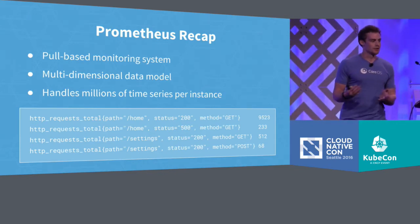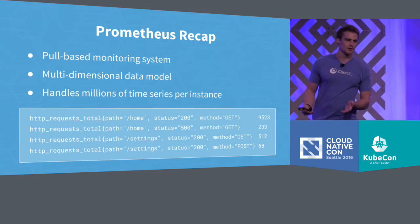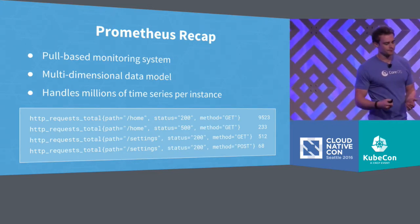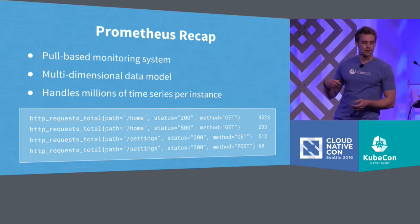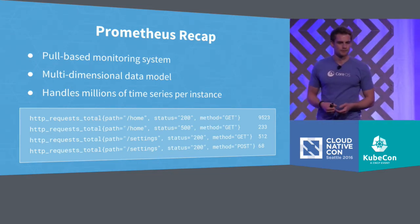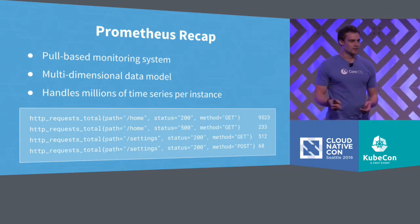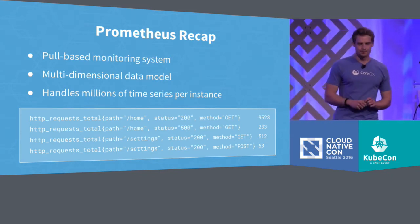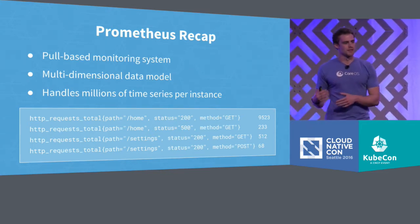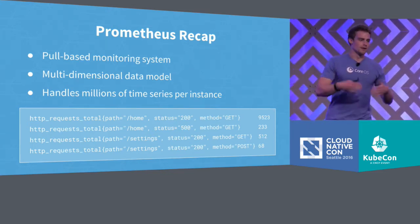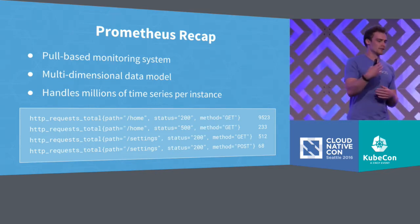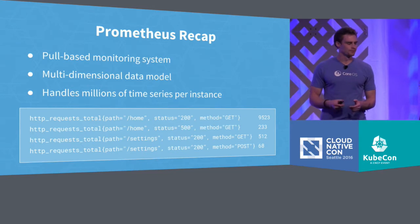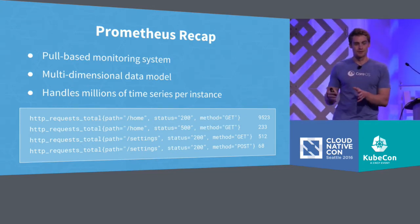But now you want to have more insight into what's actually happening — you want to know what kind of request was made. So you add another dimension; in this case, a path label which tells us which path of the application was actually requested. And you can add further dimensions, such as the return status code or the request method. You can quite easily see how this ends up with hundreds of individual counters for one single metric — we call these individual points time series. If you multiply this by the total number of metrics for a single application, by all the pods running in that application, and by all the different services you have, you quickly end up with millions and millions of time series, even for a fairly reasonably sized infrastructure.